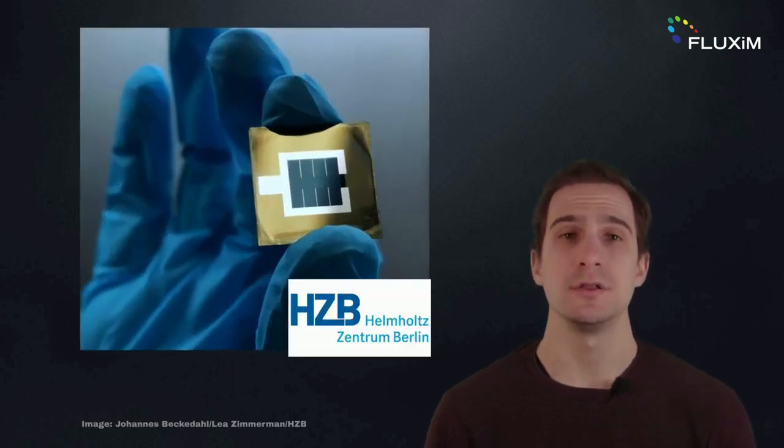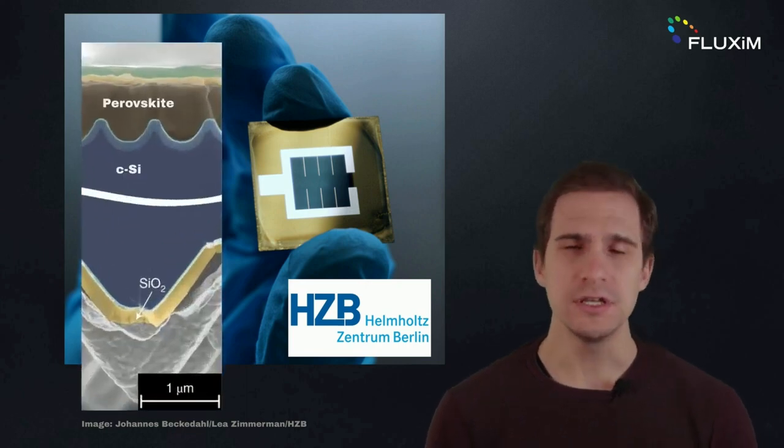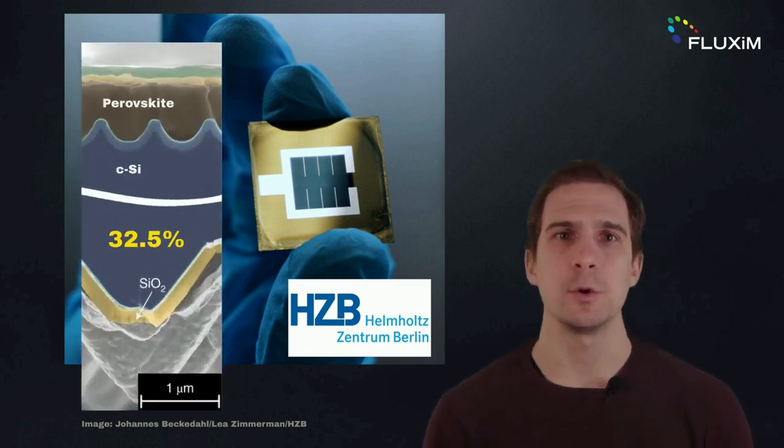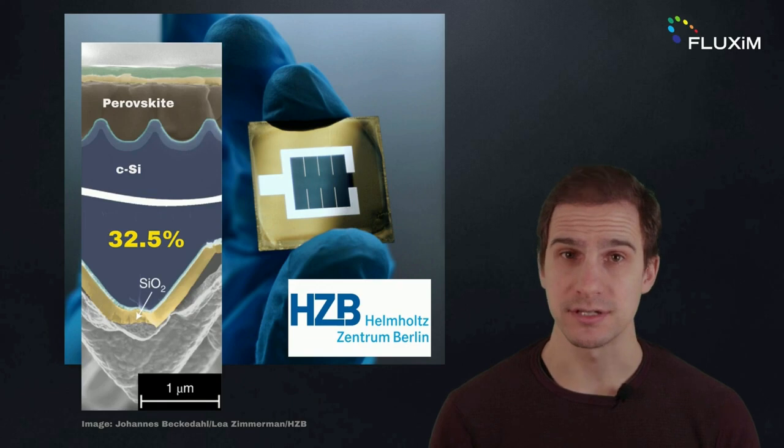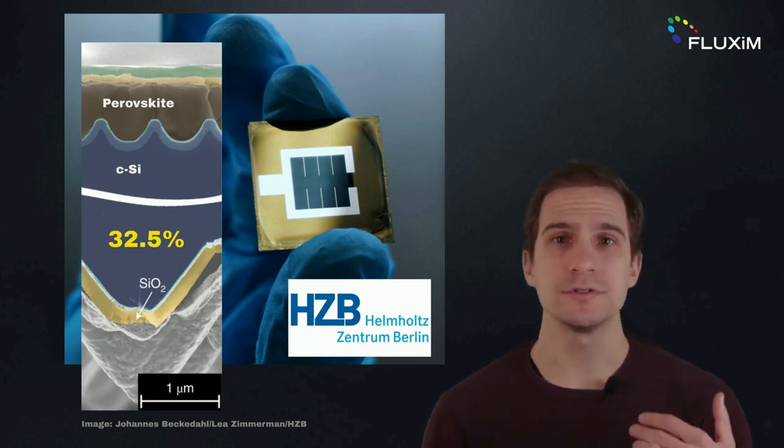These two approaches led to the highest efficiency records for silicon perovskite tandem solar cells during 2022. The record efficiency of 32.5% was obtained for a planarized tandem solar cell with a nanotexture between the two subcells, which improves light management and the deposition quality of the perovskite absorber.